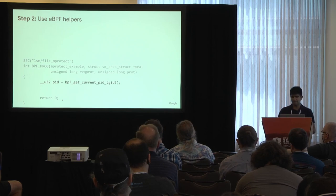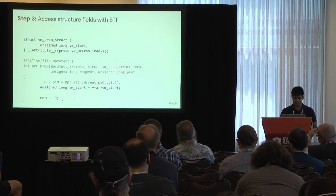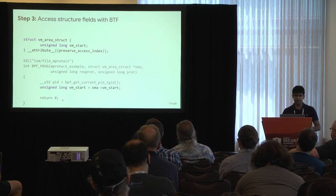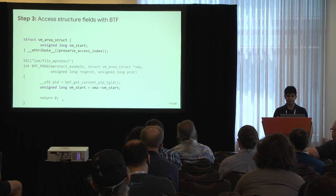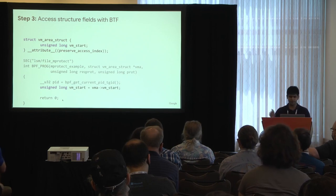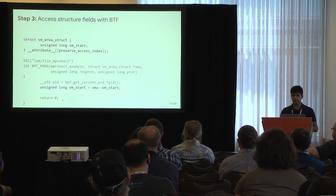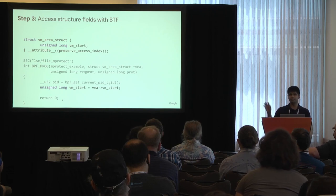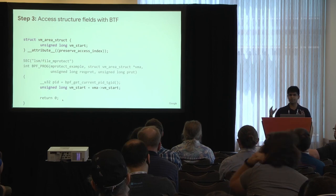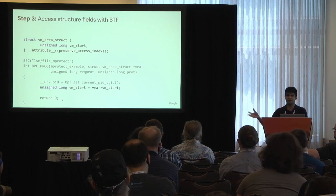You can use BPF helpers to collect more information — for example, a helper that gives you current PID/TGID. You can also do something more fancy: access the vm_start field of the VMA structure. The Clang compiler that compiles BPF is smart enough — it emits relocation information in the BPF bytecode saying the program intends to access vm_start from the VMA struct. When you load it into the kernel, it finds the right offset. This makes the whole BPF program compile-once-run-everywhere and portable — this is BTF CO-RE.